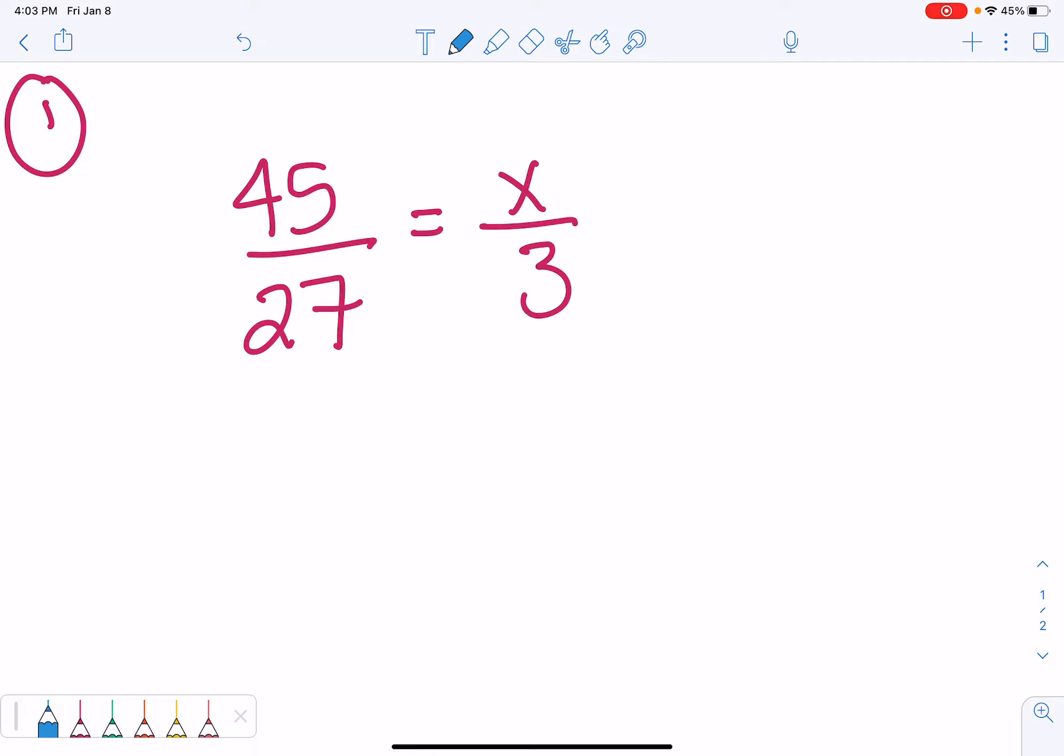The first thing we want to do when solving for x is undo to get x alone. This bar means we're dividing, so we're dividing by 3. So, to undo dividing, we multiply.